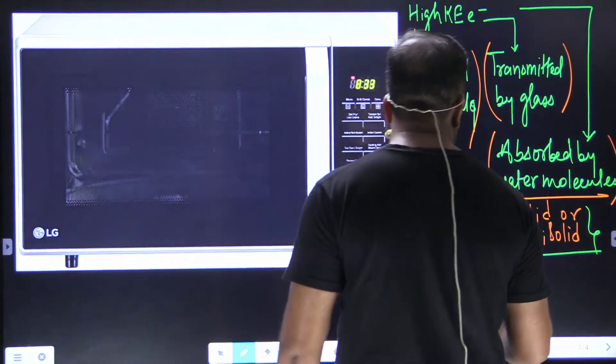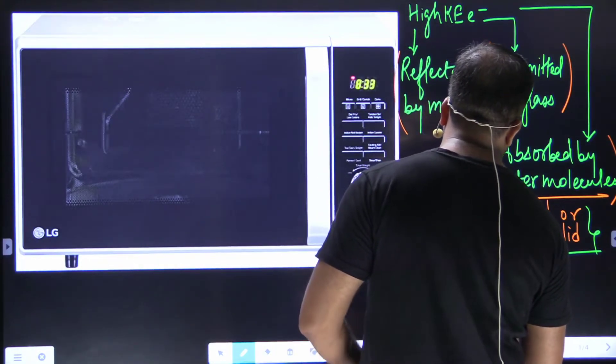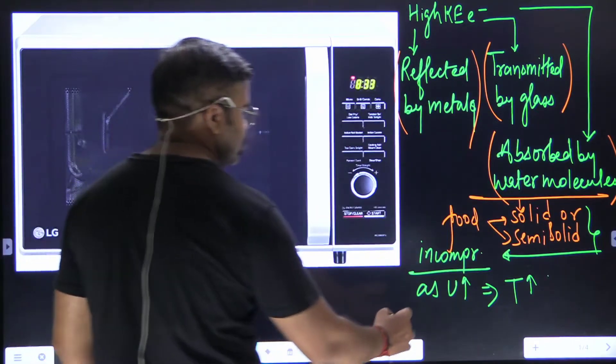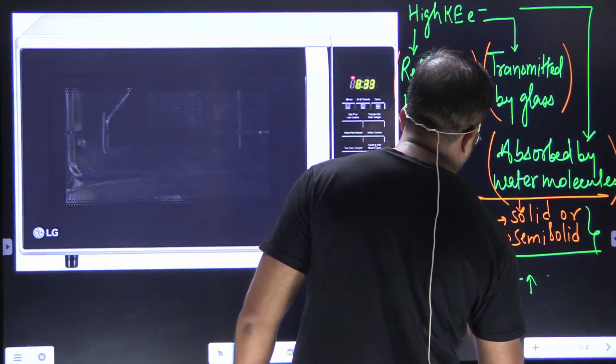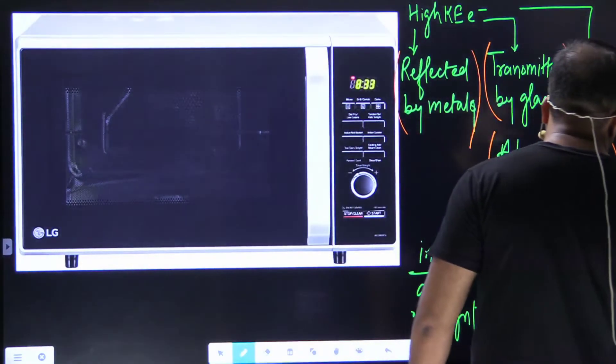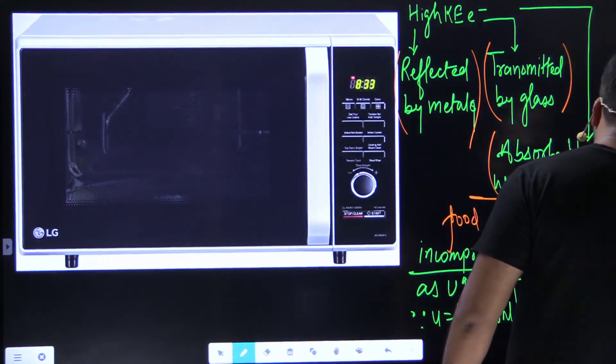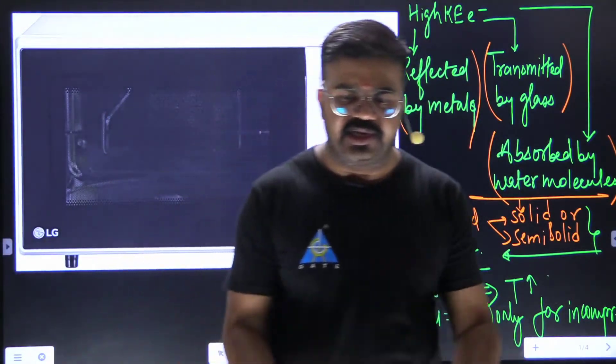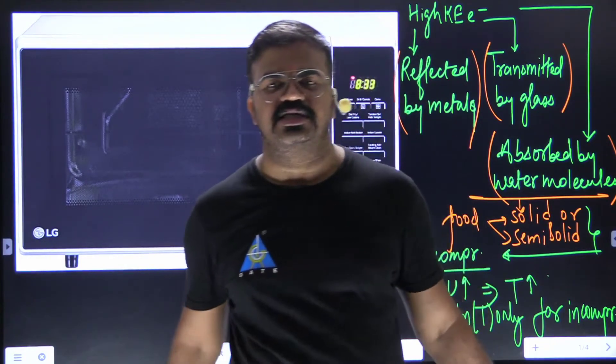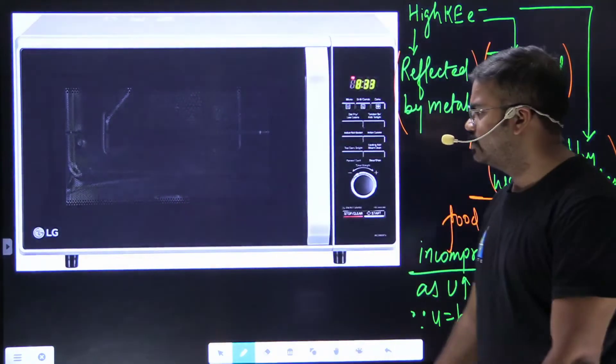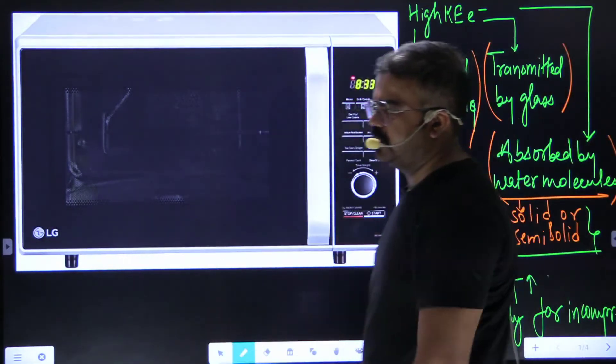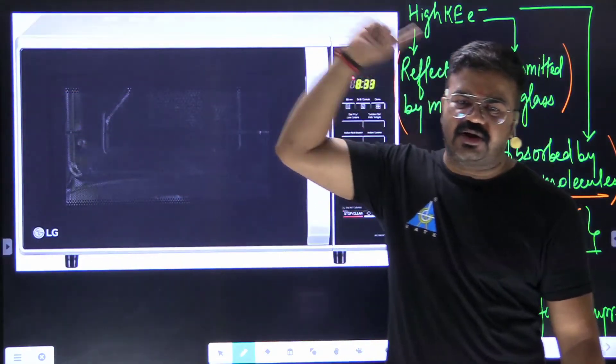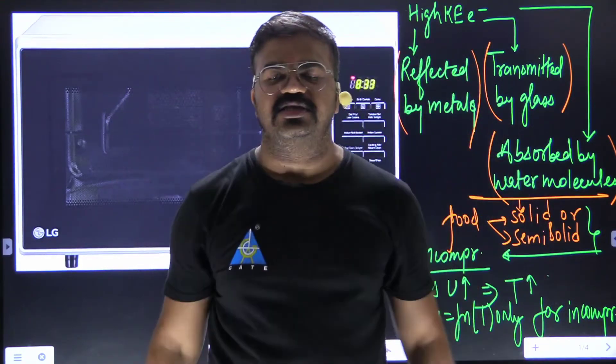Because internal energy is a function of temperature only for incompressible substances. For constant volume or incompressible substances, internal energy is a function of temperature. If it is absorbing electrons, internal energy is increasing. Internal energy is increasing, it means temperature is increasing as well. So this entire mechanism leads to increase in temperature, not heat transfer. That is why it is excluded. Microwaves are not resulting in temperature increment prima facie, means directly.